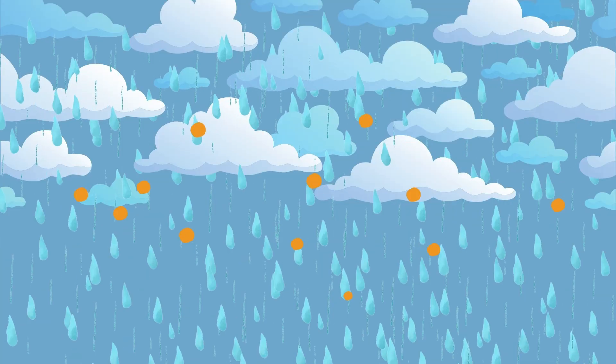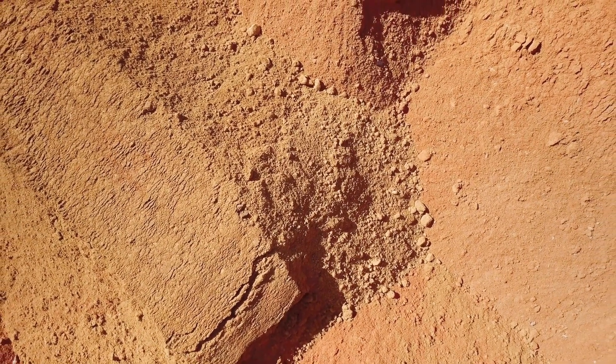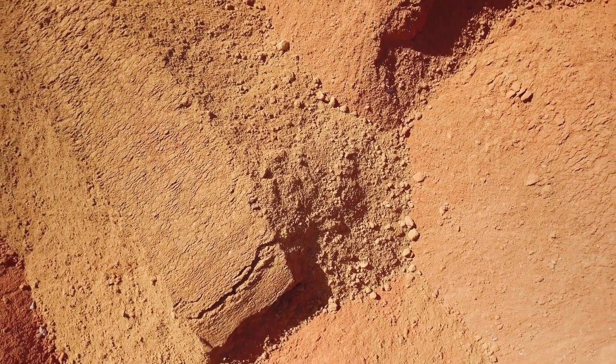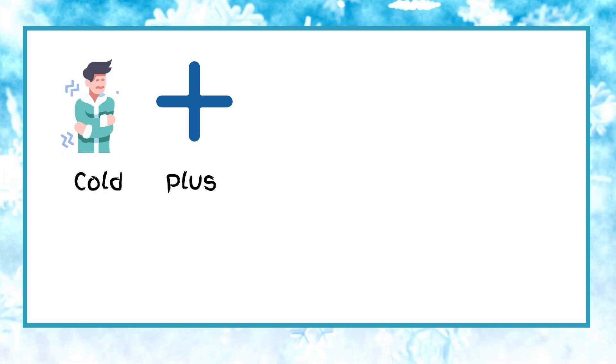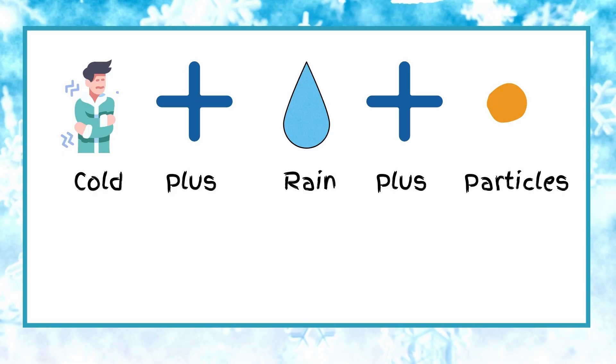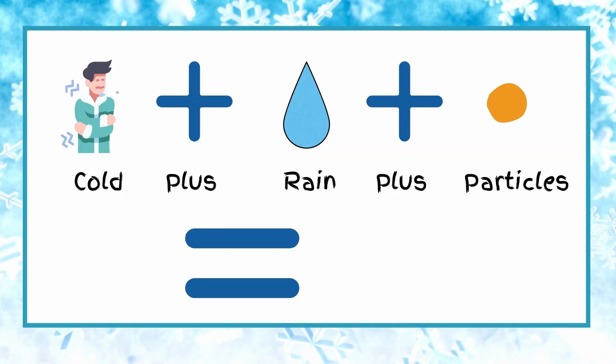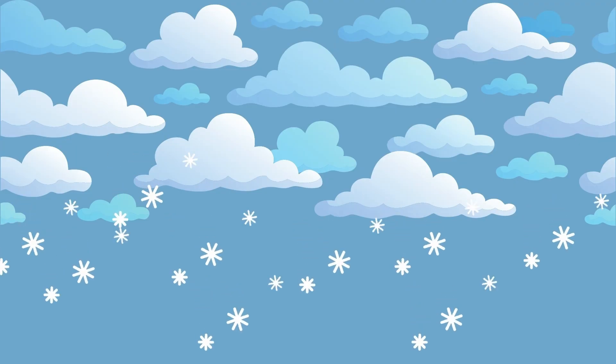There are all sorts of little particles just kind of floating around up there. Some of them are little pieces of pollen — the stuff that might make you sneeze in the spring if you have allergies. There might also be little bits of clay and dirt that have managed to make it high up in the sky. But then it gets cold, and those water droplets start to freeze around these little particles, things like the pollen and the clay, and they start falling down to earth. And that is snow.